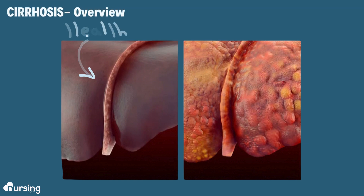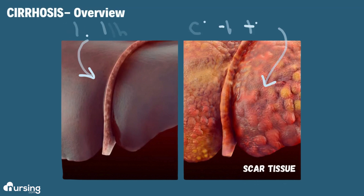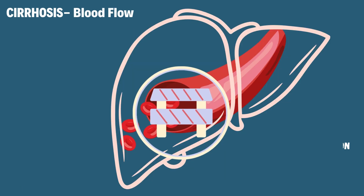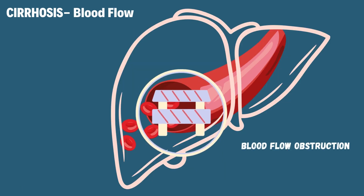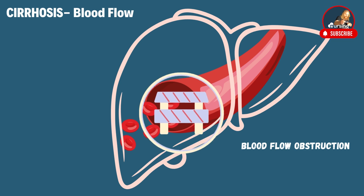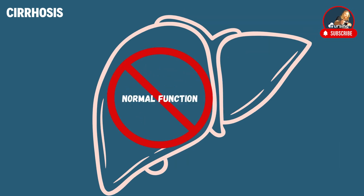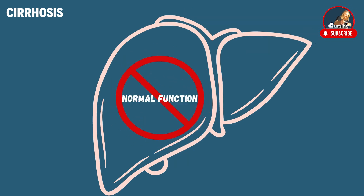Over here is our healthy liver; over here is our cirrhotic liver. Scar tissue is very tough and rigid, and this can cause obstruction of blood flow within the liver and can keep the liver from doing its normal functions.